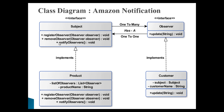The Subject interface has three methods: registerObserver, removeObserver, and notifyObservers. The Product class implements these methods. The Product class has a list of observers and a string product name. registerObserver adds an observer to the list, removeObserver removes an observer from the list, and notifyObservers notifies each and every observer when the state of the Subject changes.